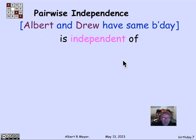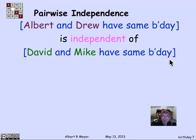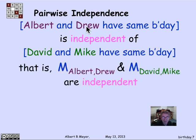The key observation is that the indicator variables are pairwise independent. Consider Mij for Albert and Drew having the same birthday, compared to whether Dave and Mike have the same birthday. We're assuming all individual birthdays are independent of each other — each person's birthday is chosen independently. So it's obvious that these two pairs, which don't overlap, have nothing to do with each other. You could prove that formally, but it is obvious because each of the individual birthdays are independent.